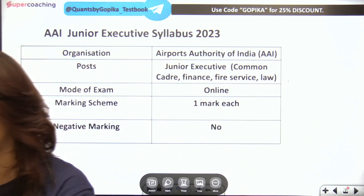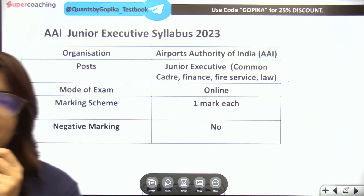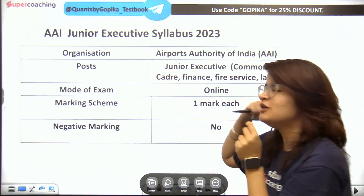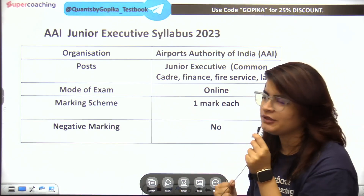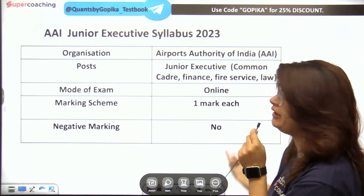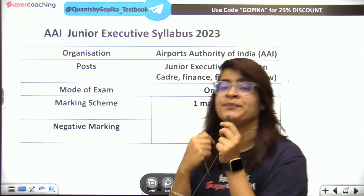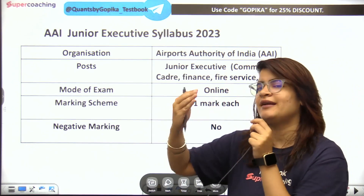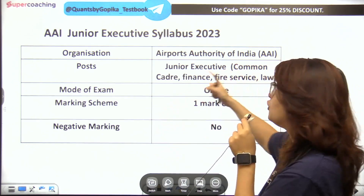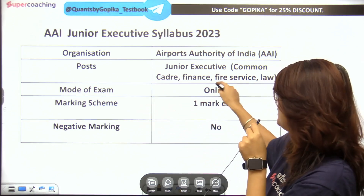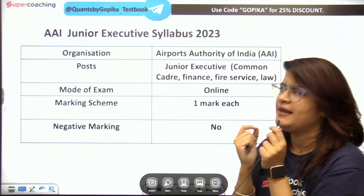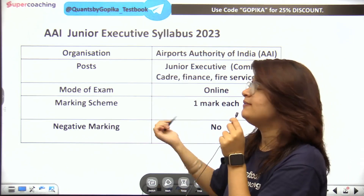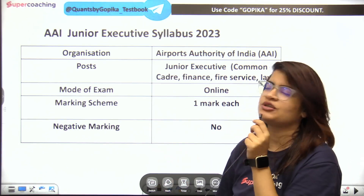As you can see on screen, what will be the pattern? The organization is the Aircraft Authority of India. The post is Junior Executive. The cadre covers common cadre, finance, fire service, and law. The exam mode is online, objective type, multiple choice questions.